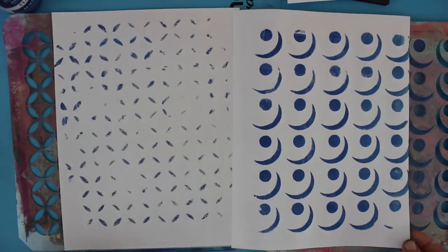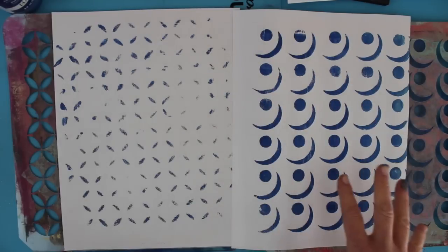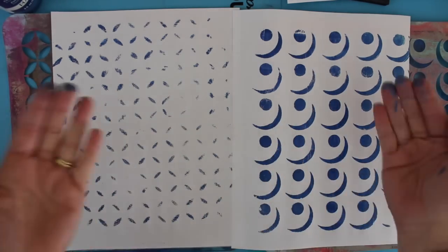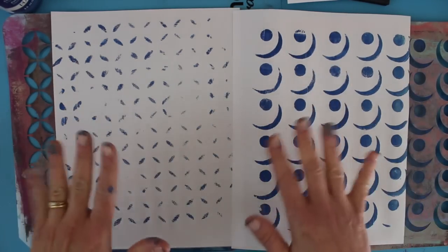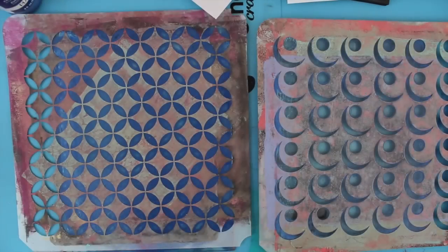All right so print number one you can see that it really did not have a lot of definition but it lifted the color. But when you use the jelly plate you get a lot more solid line definition. Again I think it's because the plate itself is squishier and it will allow you to kind of push the paper down in and get more out of it. So this is a fun technique though no matter what.